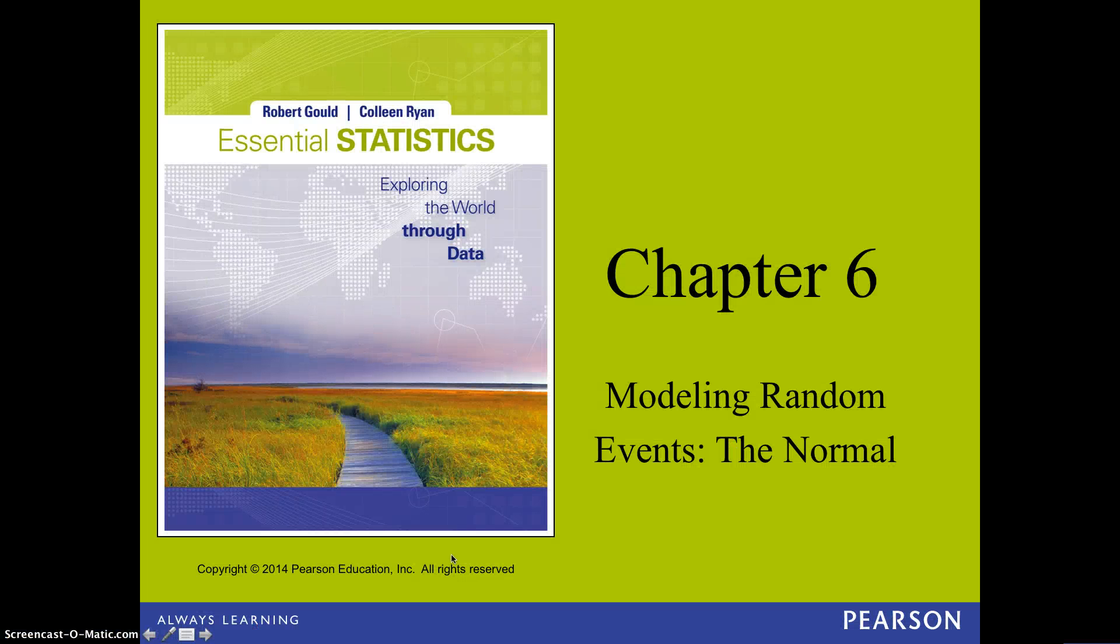Chapter Six: Random Events. We're going to talk about a couple different types of probability distributions, and the most important one is going to be the normal distribution because we're going to use it for chapters 7 and 8 also.